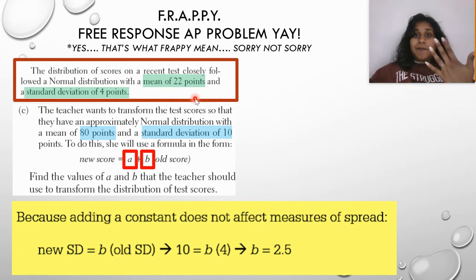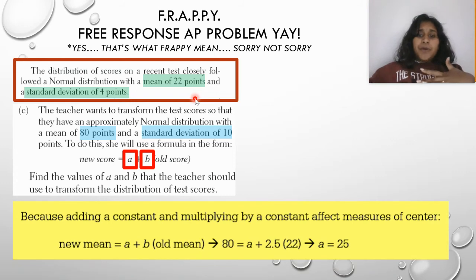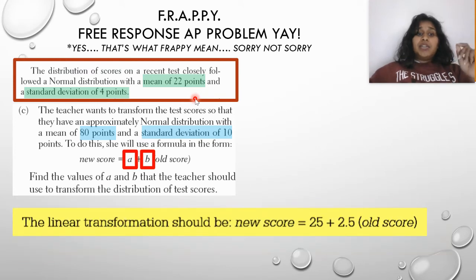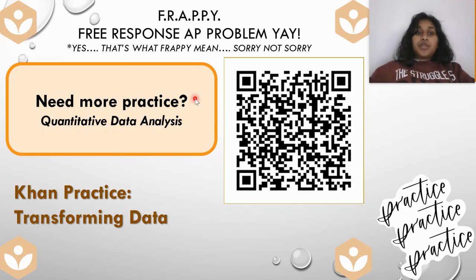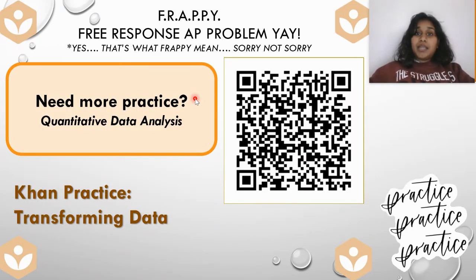Now we have one of our variables. What's the difference to solve in that last variable? Nothing. You just plug and juggle away. So we've got 80, which is the new mean that she wants to get to, 22, which is the old mean, 2.5 we just solved. Do a little bit of order of operations solving, and you get A is equal to 25. Ta-da, you have a new linear transformation. That's it. That's all you've got to do for linear transformations. So a little bit of practice on transforming data right here.